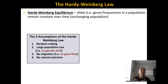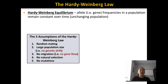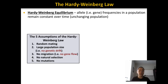Fourth, there has to be no natural selection — no pressure or selection for certain genes. Fifth, there has to be no mutations. If there is a gene mutation, it will introduce new alleles into the population, causing the population to change. So there must be no mutations for a population to remain in Hardy-Weinberg equilibrium.